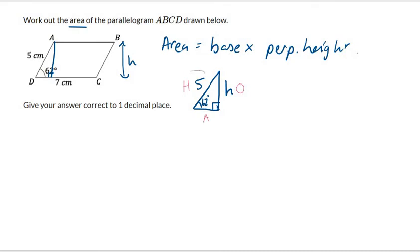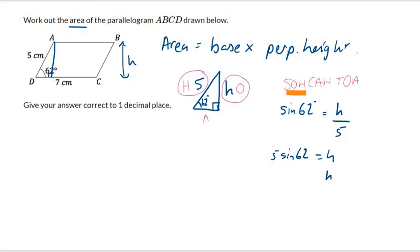So we have information on the hypotenuse and on the opposite side. So let's just remember, so we're looking for something with O and H, which is sine. So now we can write our equation down for sine. So sine of the angle is equal to the opposite side over the hypotenuse side, and we solve that equation. So we want to get H on its own, we multiply both sides by 5.